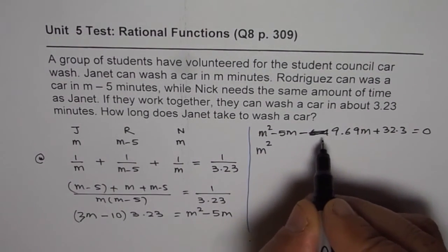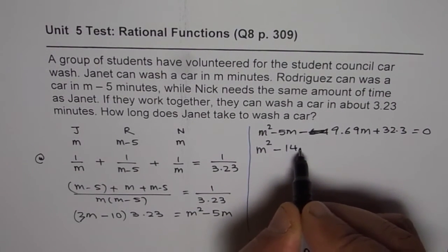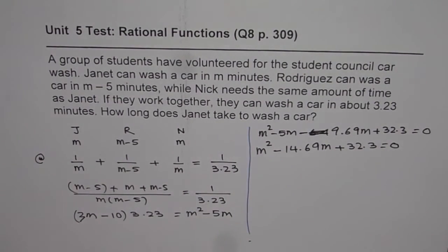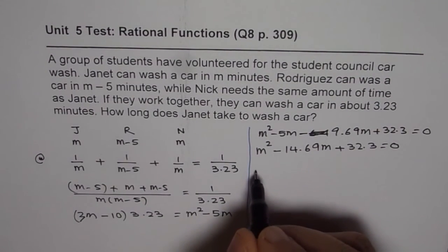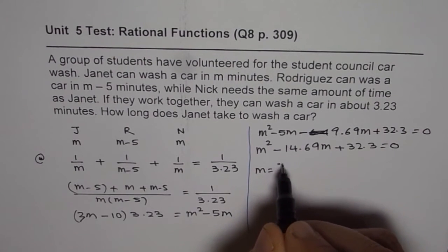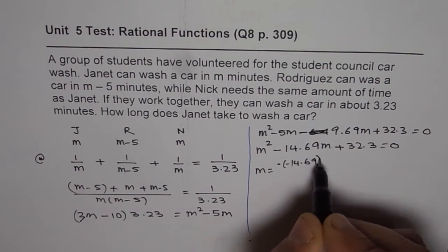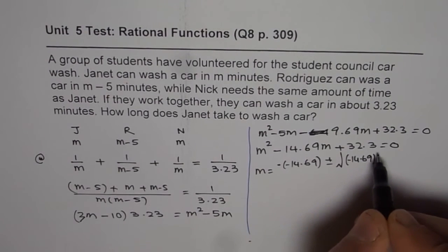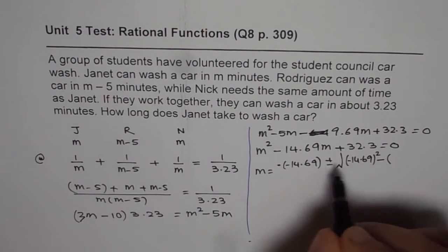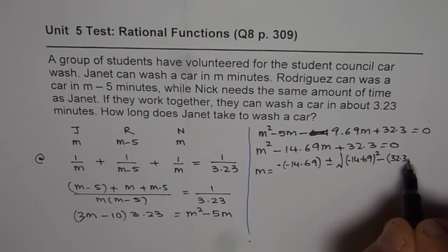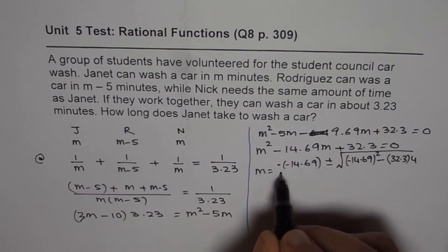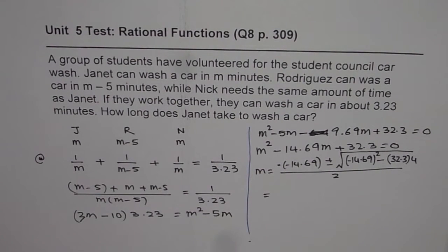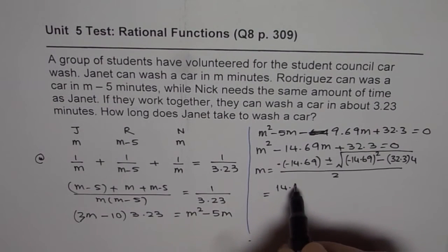M square minus 5 minus 9, that gives me minus 14.69M plus 32.3 equals to 0. Now, we can solve this quadratic equation. M equals to minus B, which is minus of minus 14.69 plus or minus square root of square of this term, minus 14.69 square, minus 4AC. So, 4 times A is 1, 32.3 times 4, square root divided by 2 times A, which is 2 times 1.